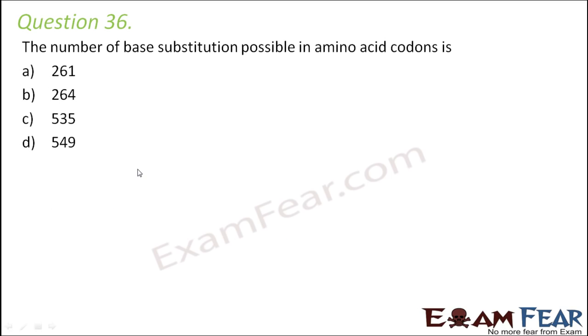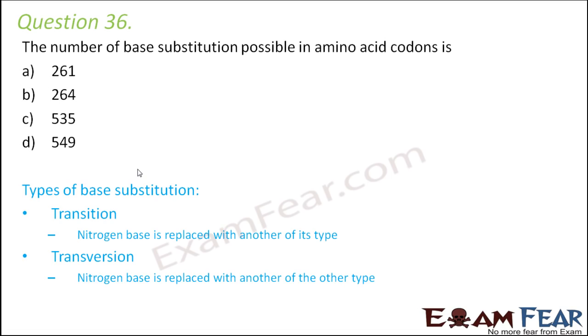There are two types of base substitutions possible: transition and transversion. Transition means nitrogen base is replaced with another nitrogen base of its type. The types of nitrogen bases are adenine, guanine, cytosine, thiamine, and uracil. Adenine and guanine fall under the category of purine, and cytosine, thiamine, and uracil fall under the category of pyrimidine. These are the two types of nitrogen bases.